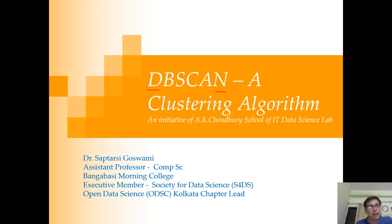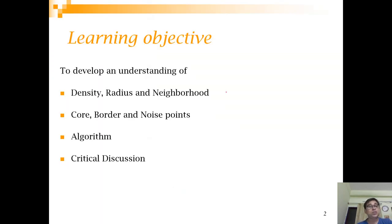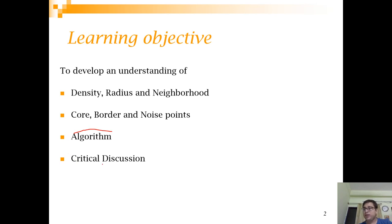The presentation is structured like this: we are going to start with a discussion on density, radius, and neighborhood. In that context, we are going to discuss core points, border points, and noise points. Using these definitions, we will look at the algorithm, and finally the advantages and disadvantages, as well as a couple of recent research works catching the community's interest.